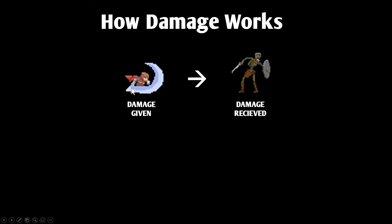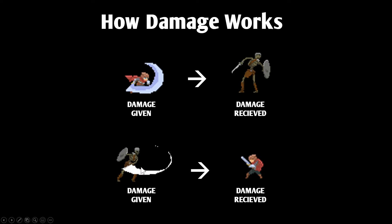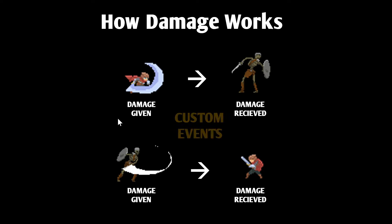I covered this briefly in the melee tutorial on the player controller, but I want to quickly explain how damage works in Unity. Basically, you have separate game objects where one game object is giving the damage and the other is receiving it. In this case you had the player attacking the enemy — what we're going to do today is flip the script so the enemy is the one attacking the player. The question is: how do we transfer the damage from one game object to the other? We're going to use custom events.